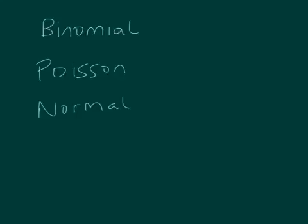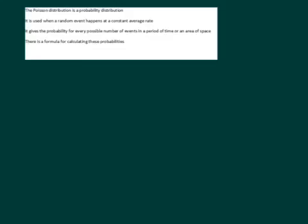This video is about the Poisson distribution. We've already looked at the binomial distribution in S2, and you've probably looked at the normal distribution in S1. But this is the Poisson distribution, named after a French mathematician called Simeon Poisson. It's a probability distribution used when a random event happens at a constant average rate — the word 'rate' is often a clue that you need to use it. The distribution gives the probability for every possible number of events in a period of time, or sometimes an area of space, and there's a formula for calculating these probabilities.